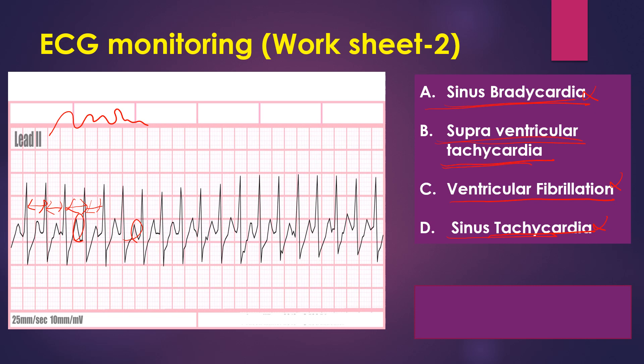The answer is supraventricular tachycardia. As I told you in the previous example, in supraventricular tachycardia, the QRS complex always overlaps with the P wave. So this is supraventricular tachycardia.